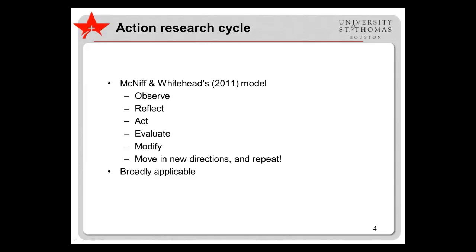In their book, All You Need to Know About Action Research, McNiff and Whitehead present a model of the action research cycle. The cycle begins with observing a situation, usually one that poses some sort of problem. Next, the action researcher reflects: what could he or she do to make the situation better? What has worked in the past? What does the literature suggest?